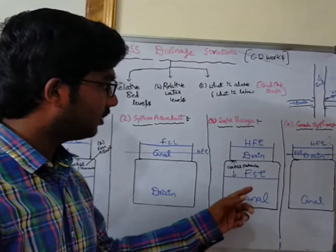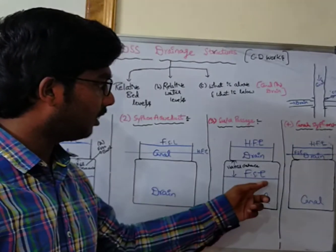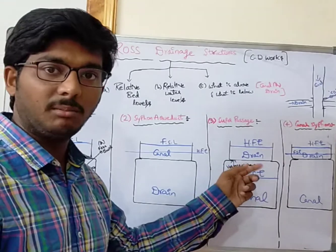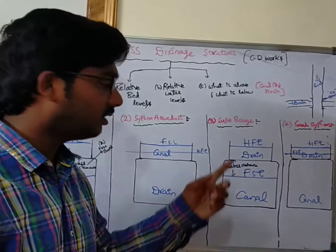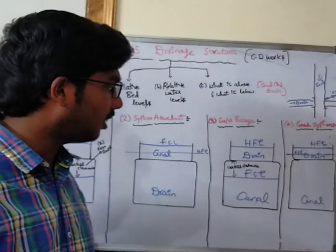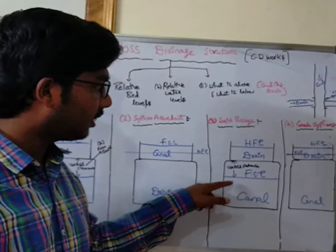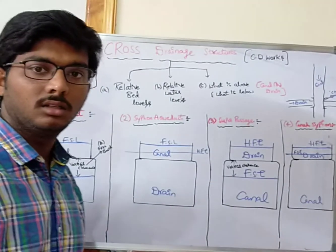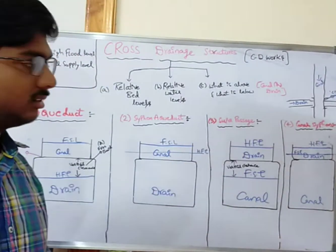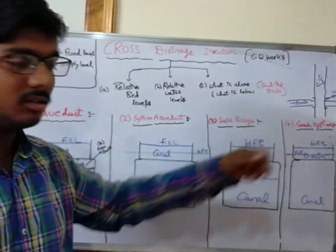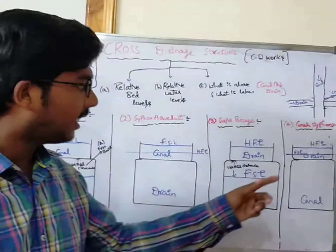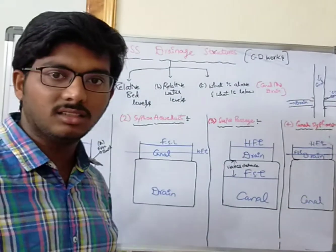In Super Passage, the Full Supply Level of the canal is well below the drain bed level, so there is a clear vertical freeboard between the drain bed level and the canal's Full Supply Level. This confirms it as a Super Passage structure.